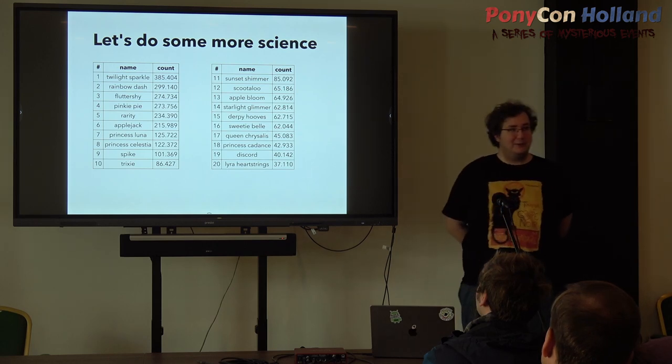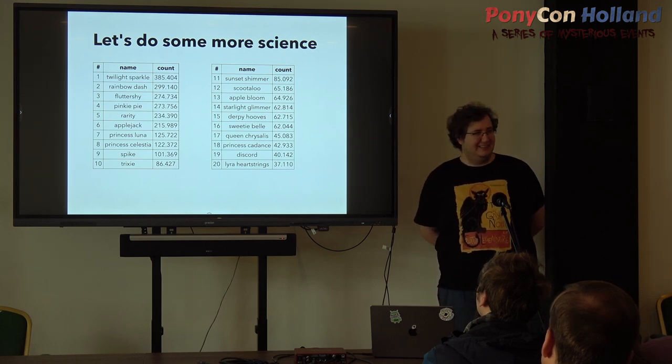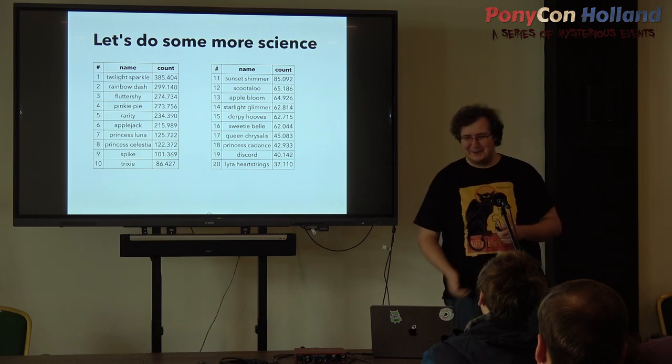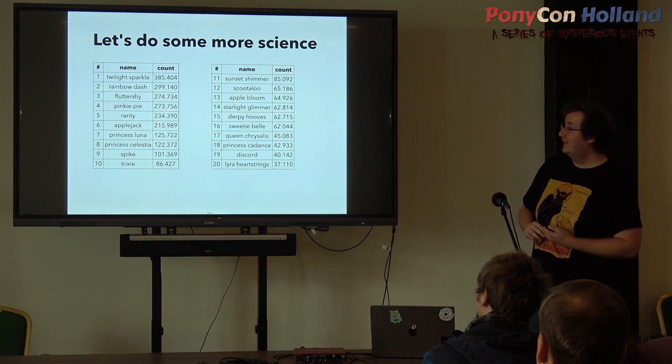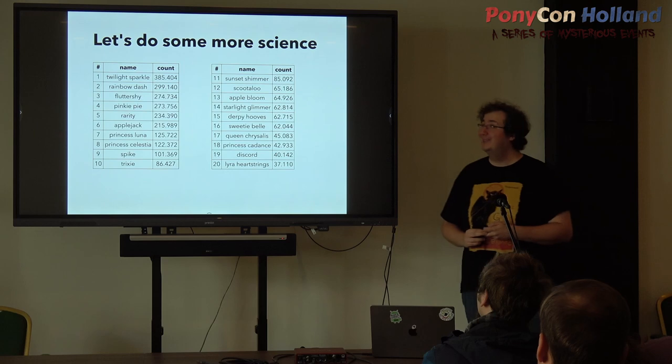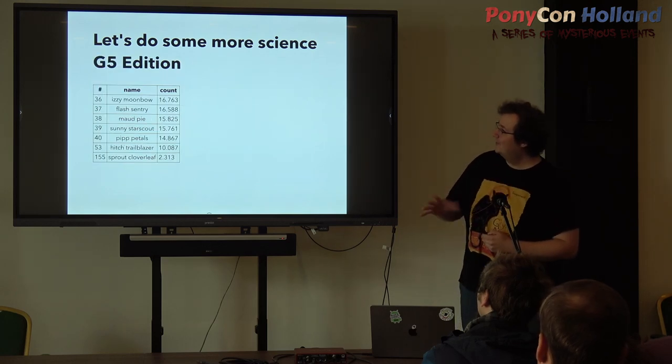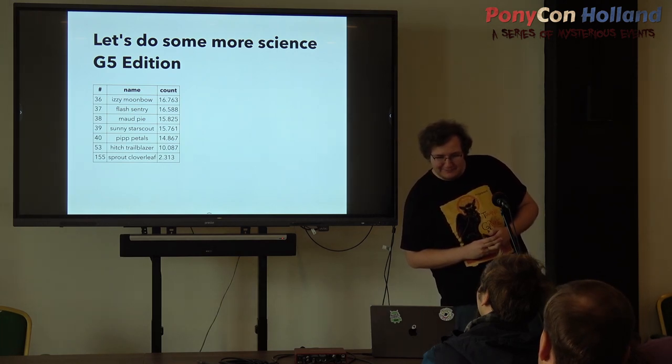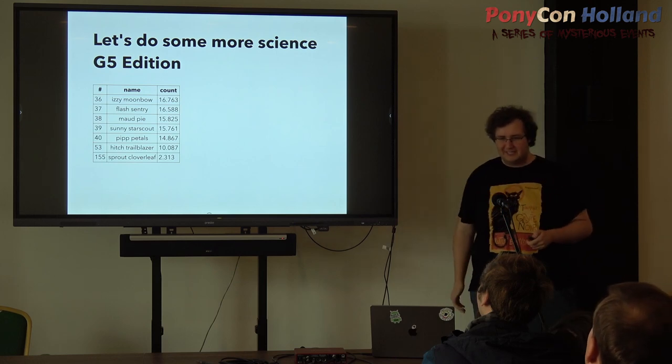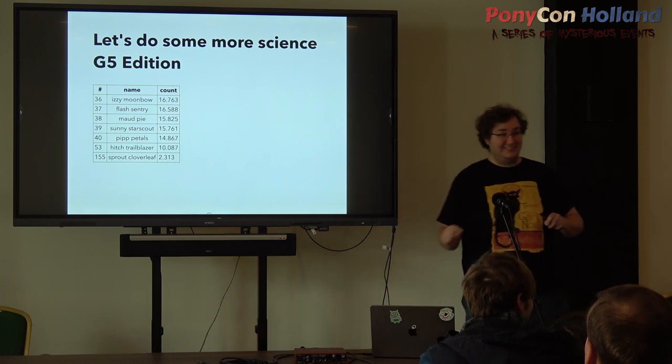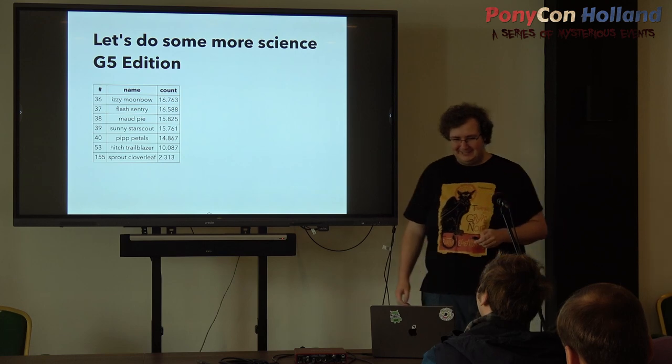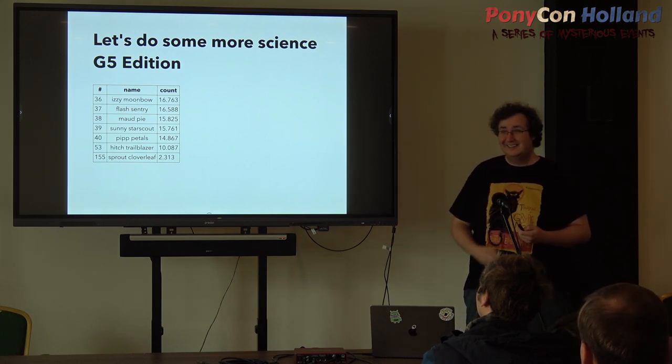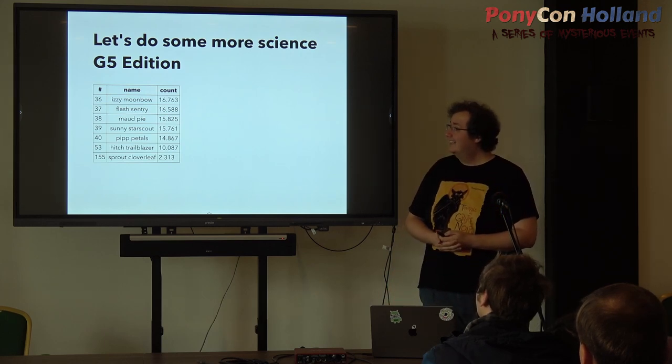Interesting stuff on that: Twilight Sparkle obviously at the top. She's part of 7% of all pictures on Derpibooru. I'm surprised Celestia and Luna are so close to it. The G5 fans might notice that this is exclusively G4 characters, so I did make sure to also filter for our favorite G5 characters, who are mostly around the 30th range, except for Hitch and Sprout. Izzy just closely outranks Flash Sentry in popularity. Sunny has lost to Mudpie, and Sprout is somewhere on the lower ranks at number 153.